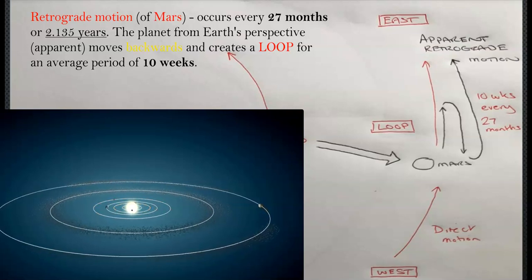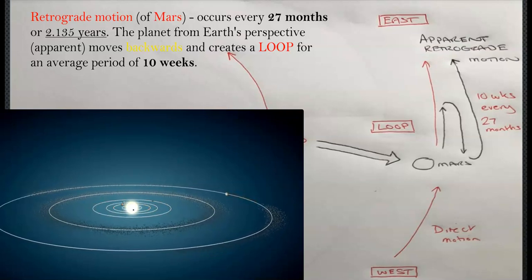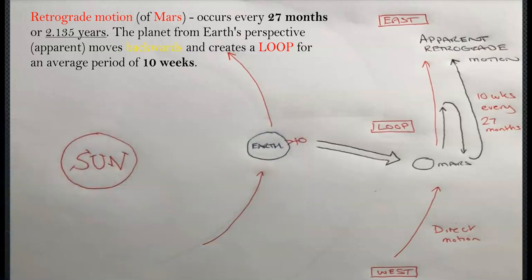Putting the sun in the center as the heliocentric model allowed us to explain how this phenomena occurs. Earth is closer to the sun and moving faster in its orbit, while Mars is going slower. Because of the speed difference, Earth actually overtakes and laps Mars on its orbit every 2.1 years. As Earth overlaps Mars, Mars appears to move backwards because Earth is going quicker. After Earth passes and continues around the sun, you see Mars continue on its normal direct path eastward from Earth's perspective.